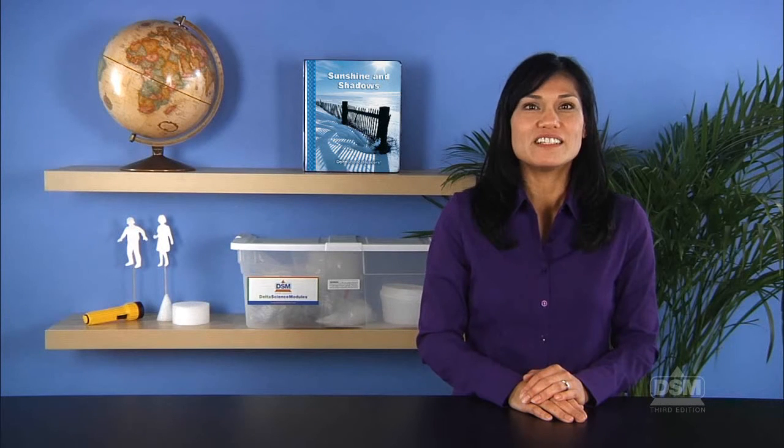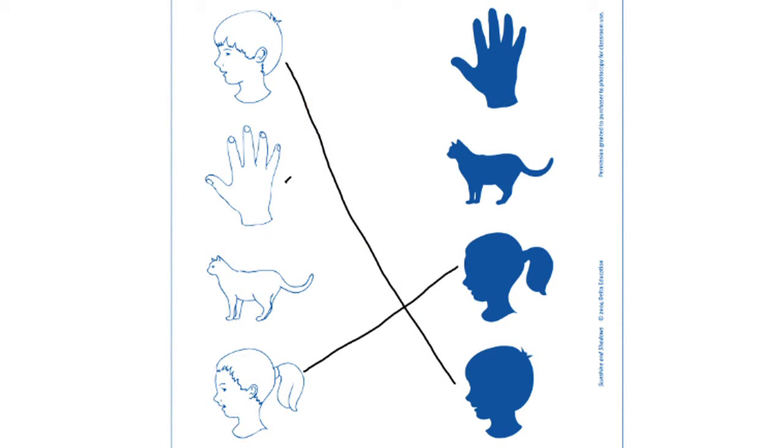Inform students that, with the setup they used, an object will make a shadow that has approximately the shape of the outline of the object. Finally, turn the lights back on and give each student a copy of Activity Sheet 2. Instruct students to draw a line from each object to its silhouette.